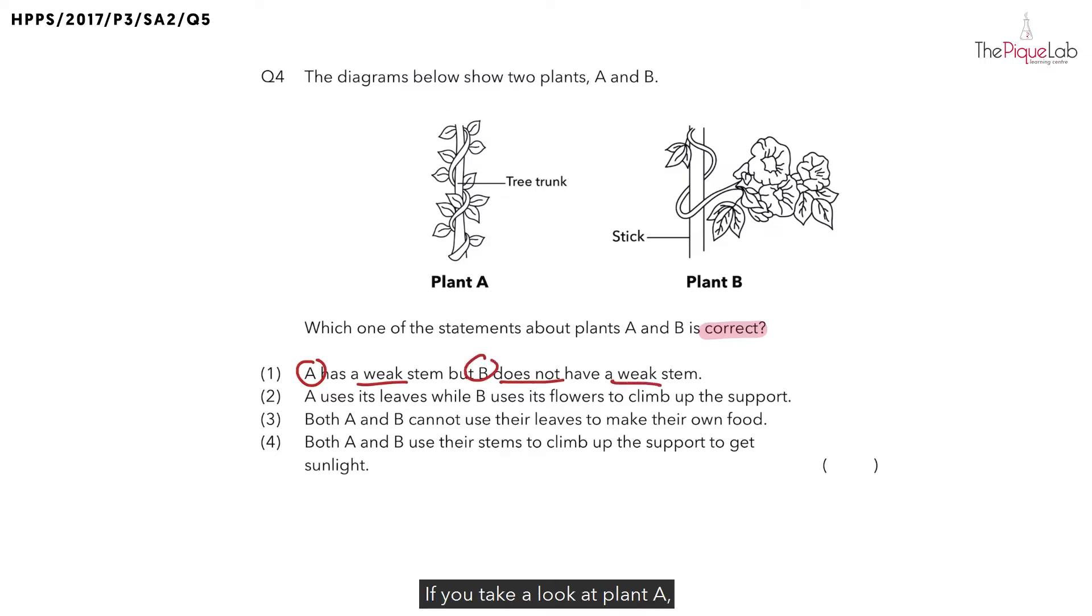If we take a look at plant A, you'll realize that plant A is growing around something. What is it growing around? It is growing around a tree trunk. So the tree trunk itself is actually not plant A. Plant A is actually the plant that's twirling around the tree trunk.